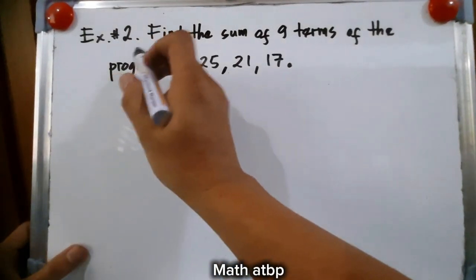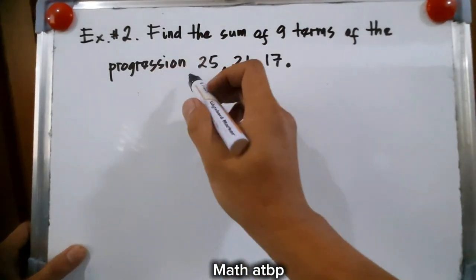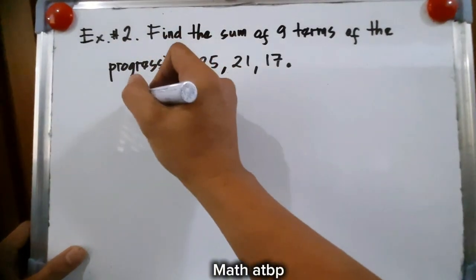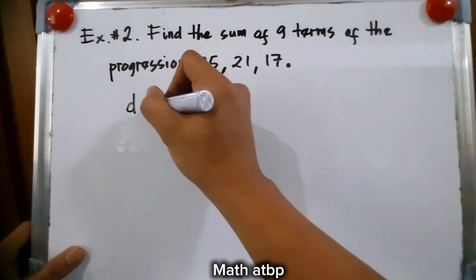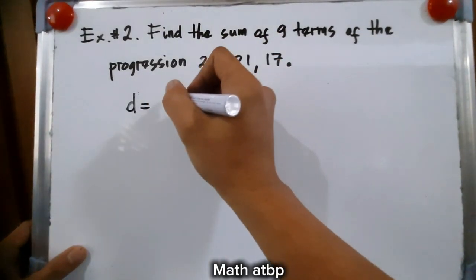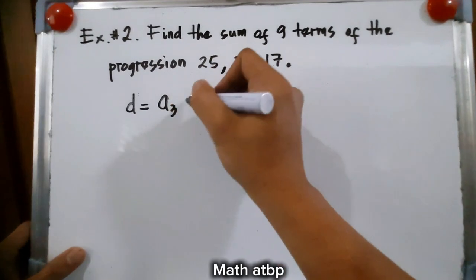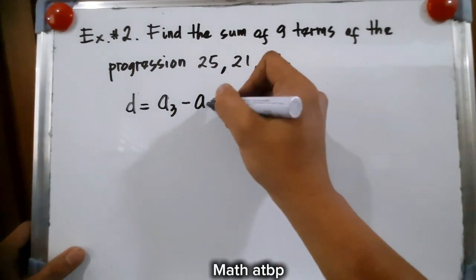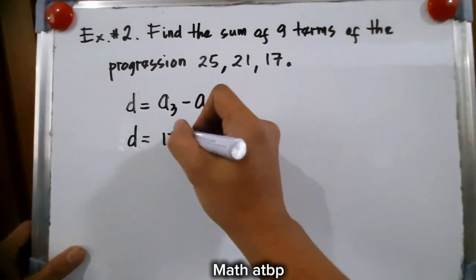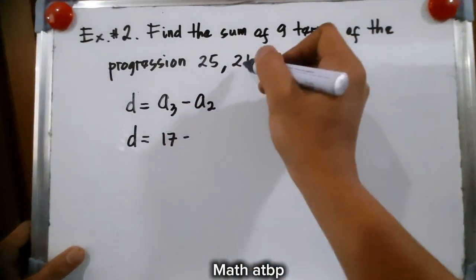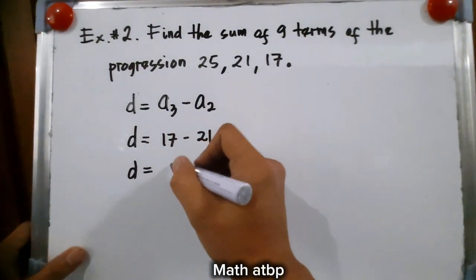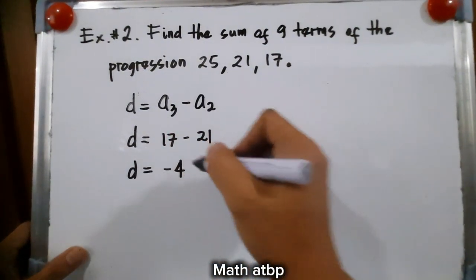Example number 2. Find the sum of 9 terms of the progression 25, 21, 17. Let us first find the difference. The difference can be obtained using 2 consecutive numbers. This time we'll be using a sub 3 minus a sub 2. The difference is equal to a sub 3, which is 17, minus a sub 2, which is 21. Therefore, the difference is equal to negative 4.